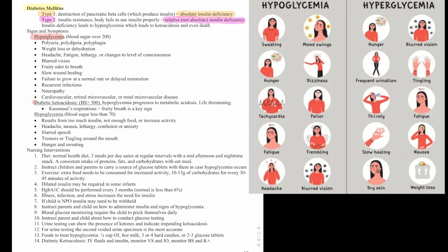Diabetic ketoacidosis occurs when blood sugar gets above 300 and hyperglycemia progresses to metabolic acidosis. This is life-threatening. A key term to look for is Kussmaul's respirations, along with fruity breath — this is a key sign of diabetic ketoacidosis.